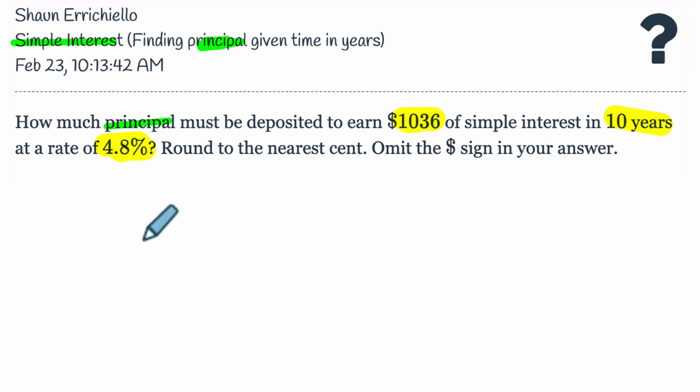Okay, so how much principle? What formula are we going to use here? Well, we have this relationship. I, which is the interest, is equivalent to principle times the rate of the interest times the time.